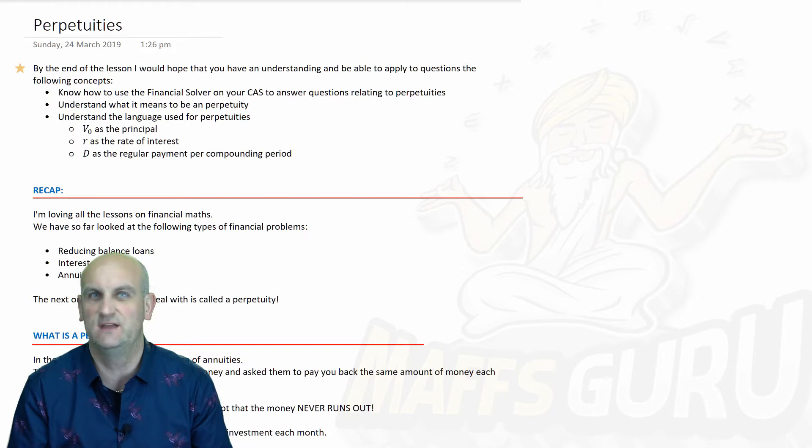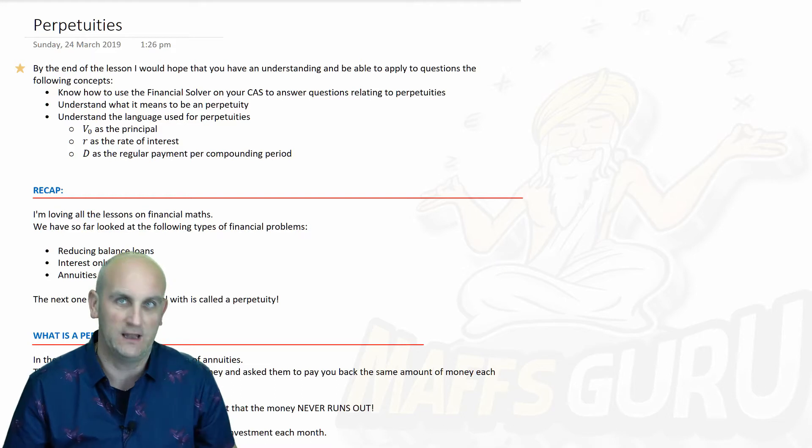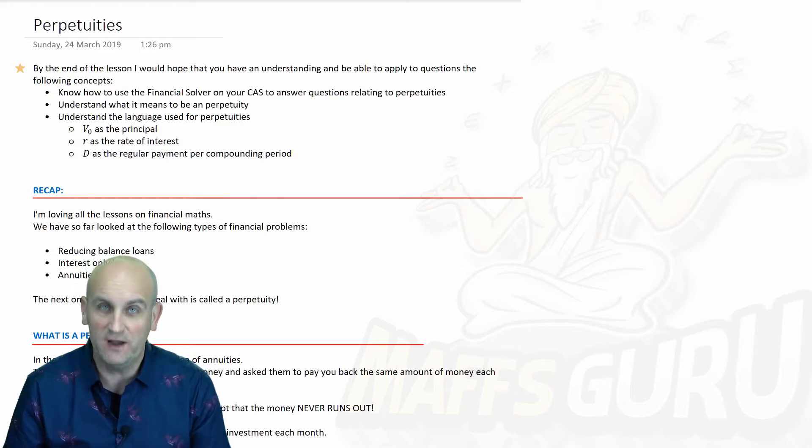They keep paying us and give us little bits of interest, but the more we take, the less the interest, and eventually the money runs out. For our financial calculator, we're effectively looking for our future value to be zero. So what on earth is a perpetuity?